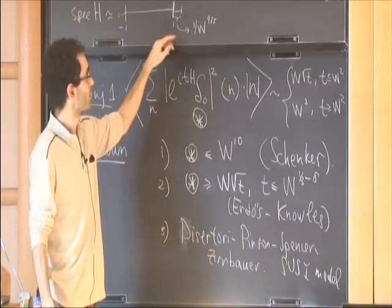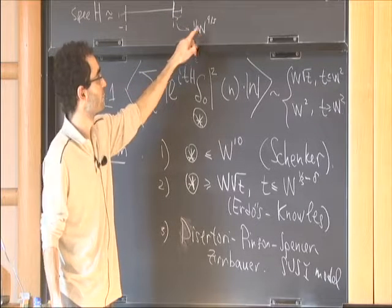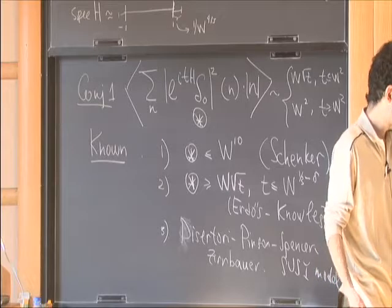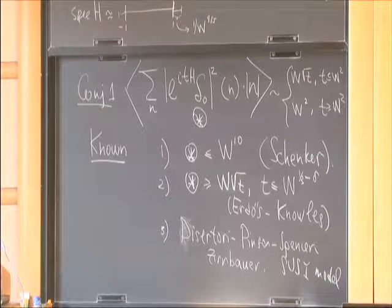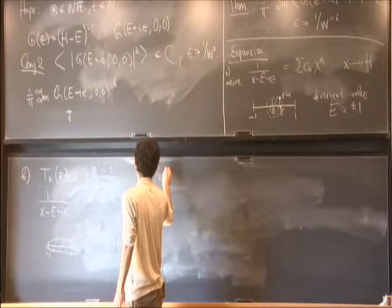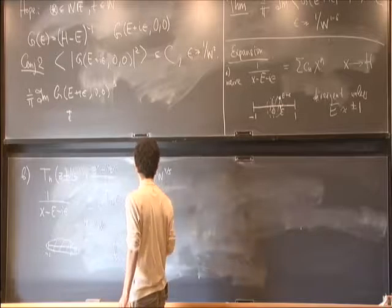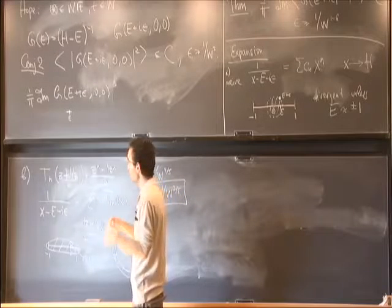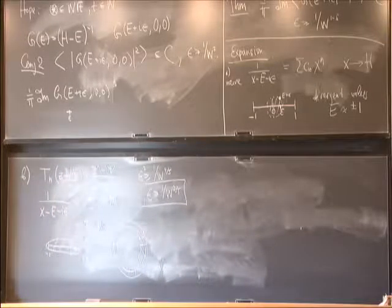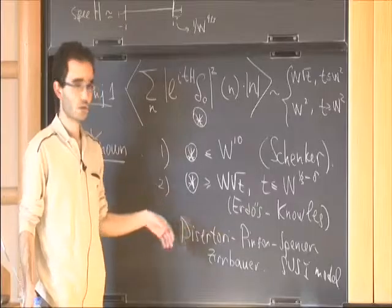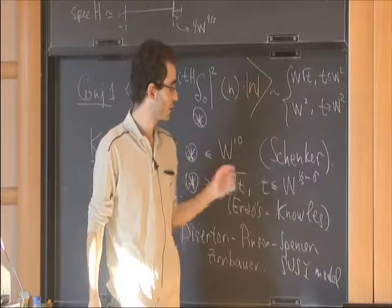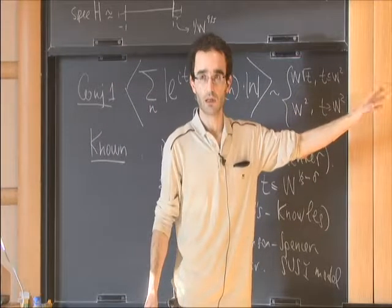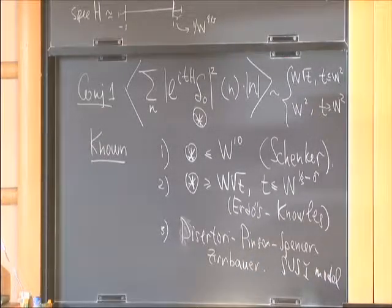The problem is that you have some spectrum at distance 1 over W to the 4/5 outside the interval. For the Chebyshev expansion to work, you need epsilon squared to be larger than 1 over W to the 4/5, which means you should take epsilon larger than 1 over W to the 2/5. This corresponds roughly to the result of Erdős and Knowles, who get stuck at this point — they use something like this approach and that is why they cannot do better.